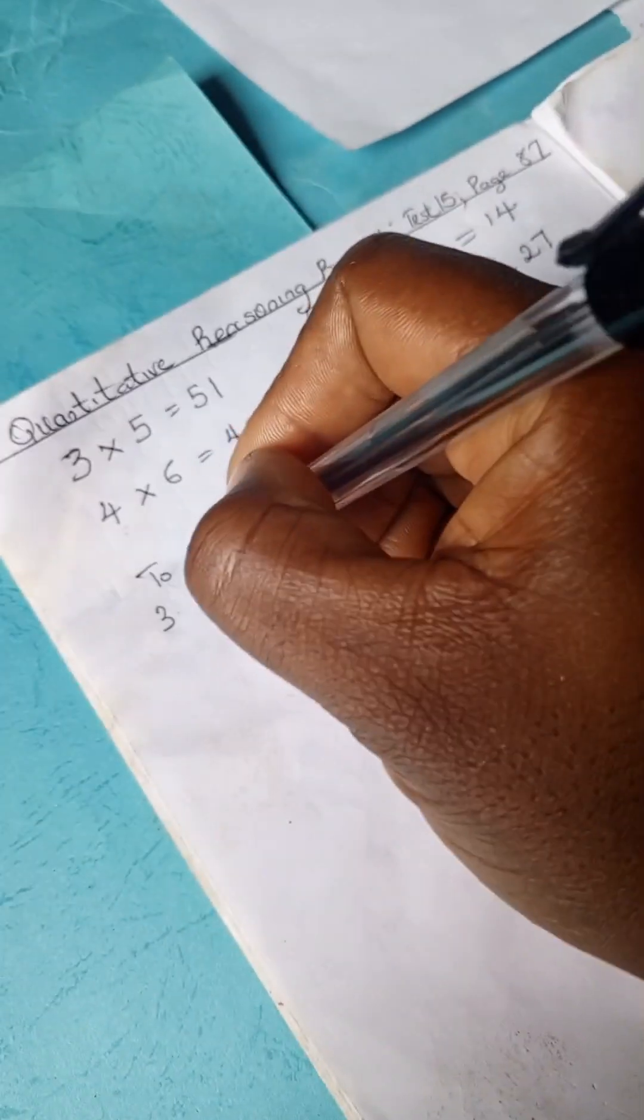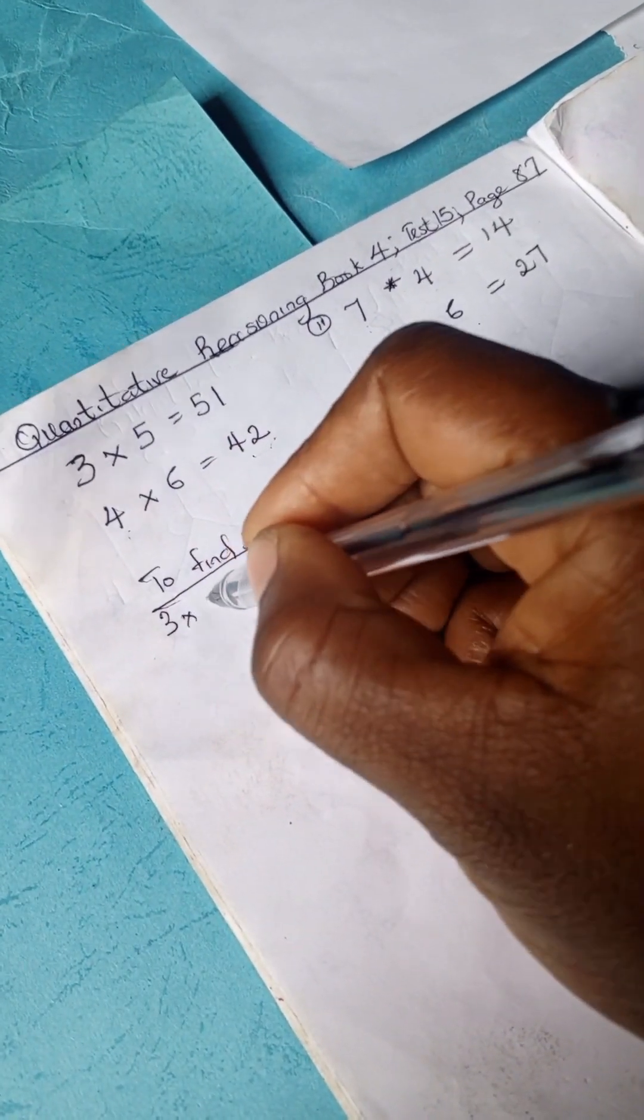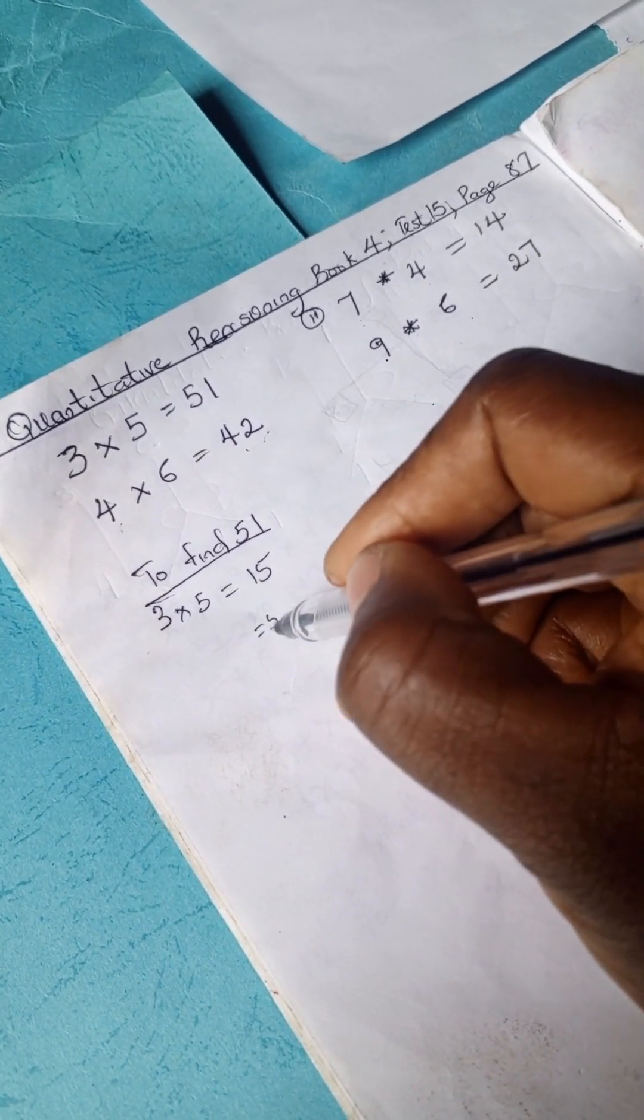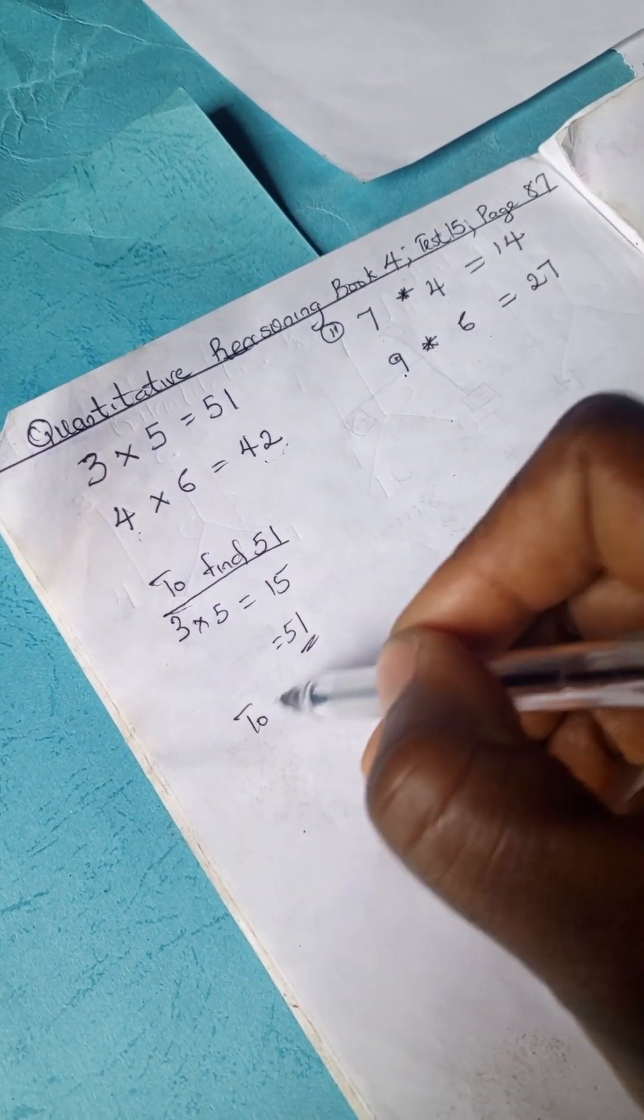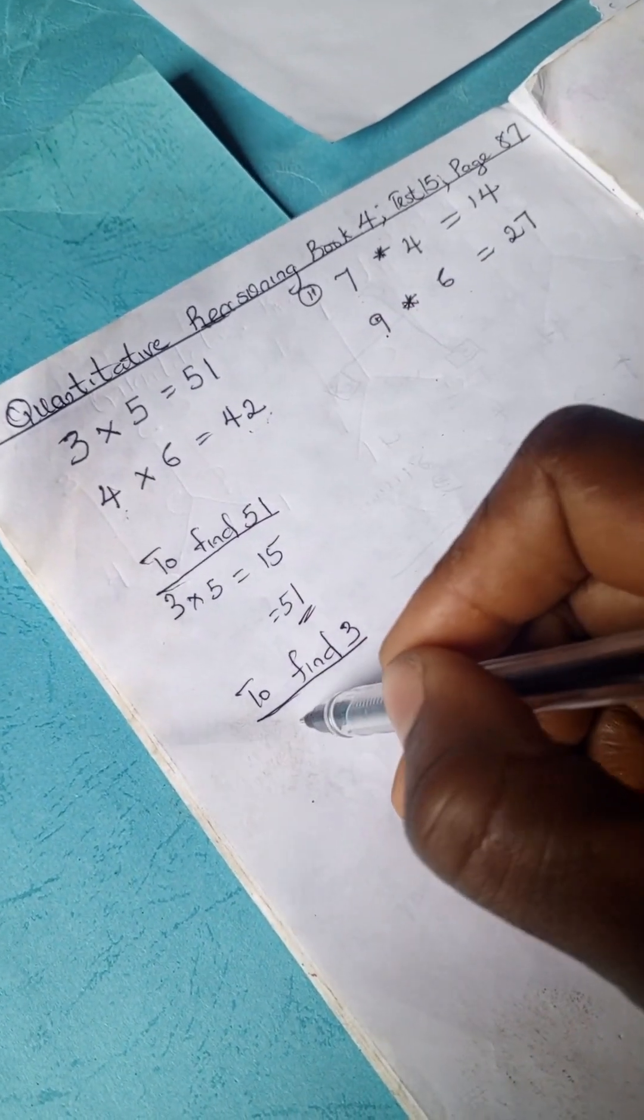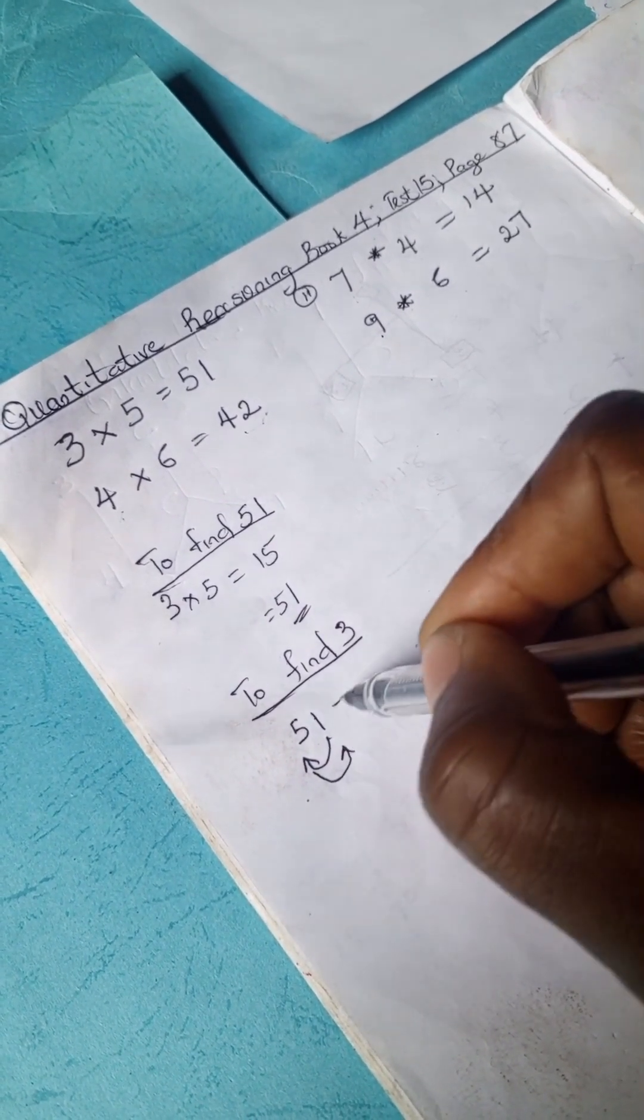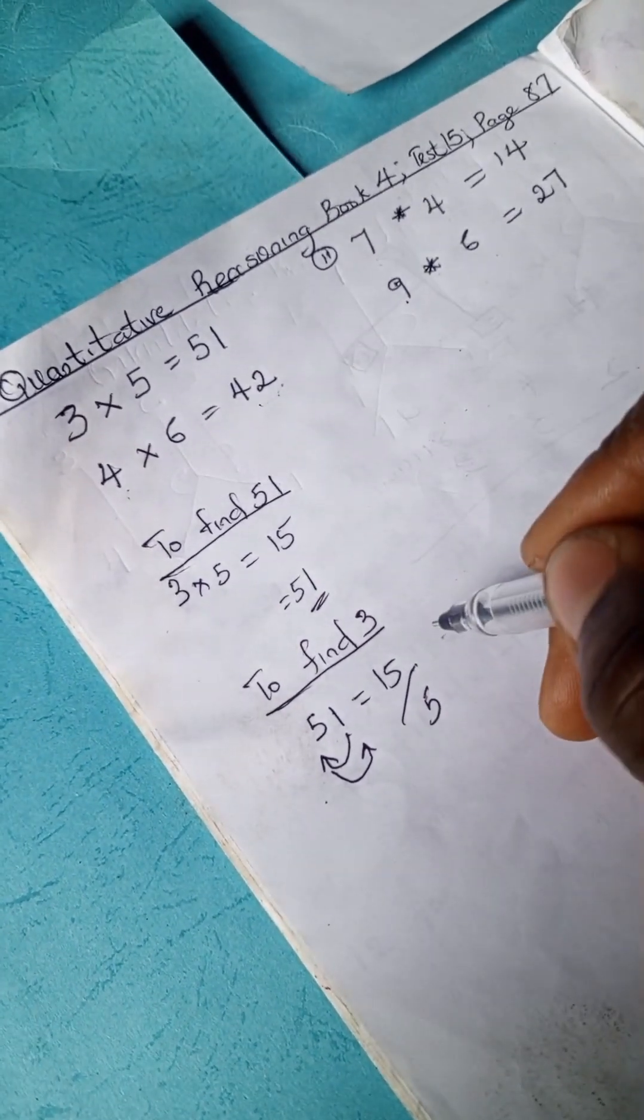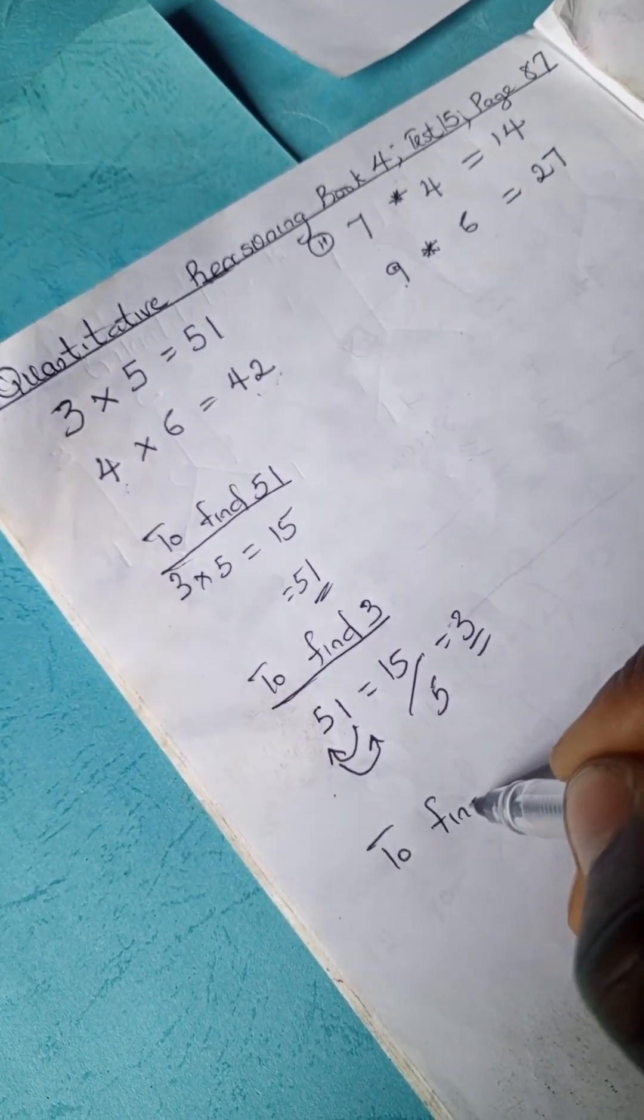If 3 times 5, let's try to find 51. 3 times 5 is 15, simply reverse this number and you have 51. So if you need to find 3, simply reverse 51 and you have 15, and you then divide 15 by 5 and you have 3. Same goes for 5. To find 5, reverse 51 and you have 15 divided by 3, you have 5.